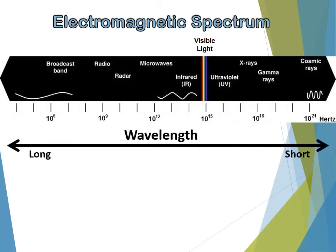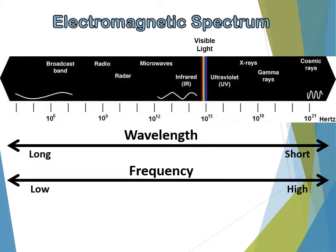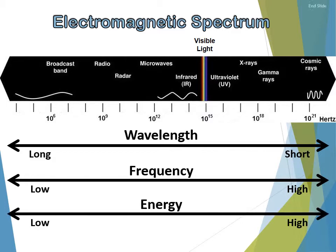Along with the electromagnetic spectrum, short wavelengths are on the right and long wavelengths are on the left. High frequencies are on the right and low frequencies are on the left. Because frequency corresponds to energy, a low frequency means low energy and a high frequency means high energy.